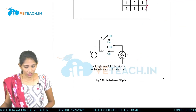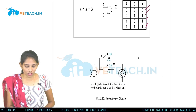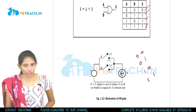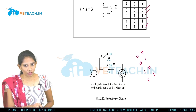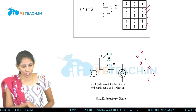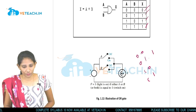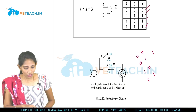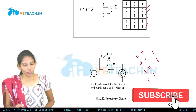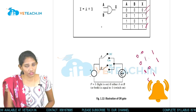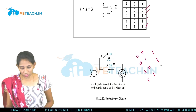In the OR gate truth table: 0+0=0; 0+1=1; 1+0=1; 1+1=1. In the switching diagram the switches are connected in parallel. For 0,0: both switches are off — no signal, output zero. For 0,1: switch B is on so the signal passes through switch B — output is one. For 1,0: switch A is on so the signal passes through switch A — output is one. For 1,1: both switches are on so the signal passes to the output — high voltage, output is one.